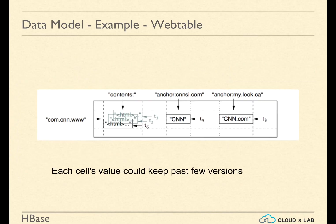Each cell can keep the past few versions of values. For example, the previous content of www.cnn.com is captured in T3 and T5 versions.